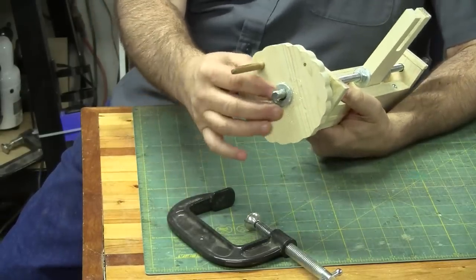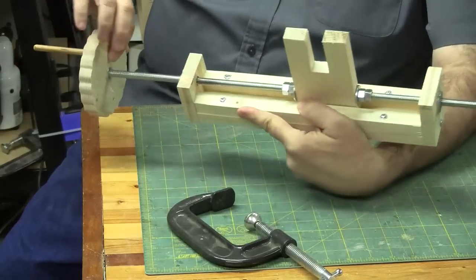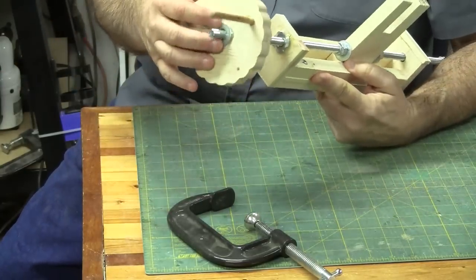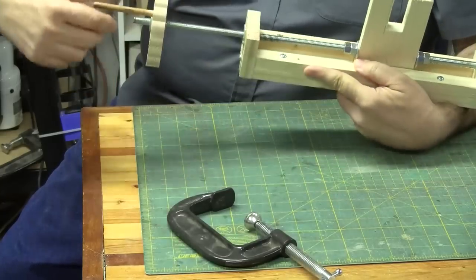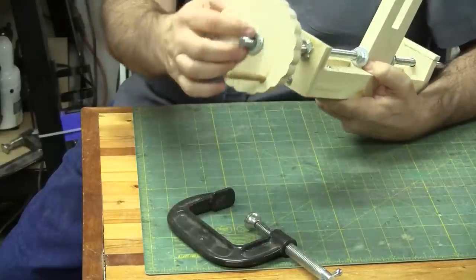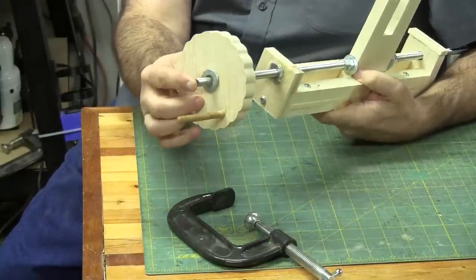The handle was just cut on the scroll saw, and again I put a nut inside there and epoxied that all together so it would stay strong. I just simply put this little dowel on the end to give me something to hold on to as I turned it.